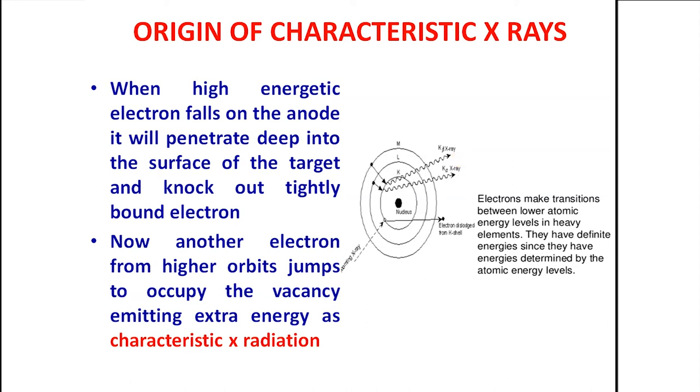You just see, if an electron in the L shell is removed, then this vacancy may be occupied by an electron from, when the electron in the K shell is removed, this may be occupied by an electron from L shell or M shell, etcetera.